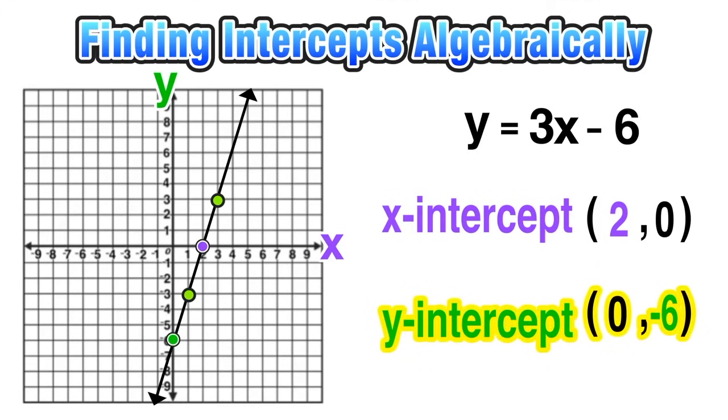So we could just graph it and find the intercepts that way for this particular function. Now you also may have noticed that for a linear function, that constant at negative six represents the y-intercept. So it should make sense that our y-intercept was at the point (0, -6), and that those negative sixes match up.